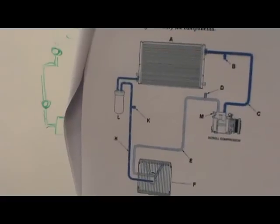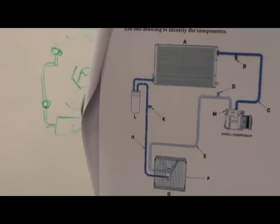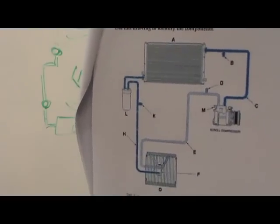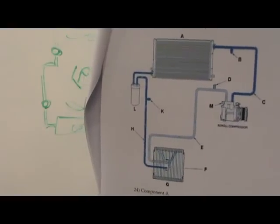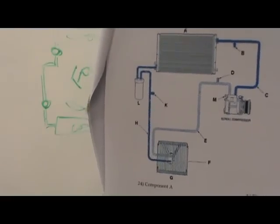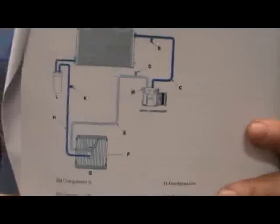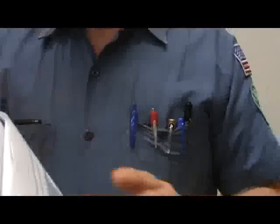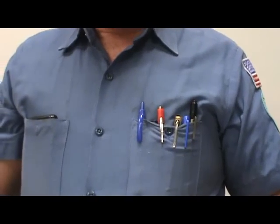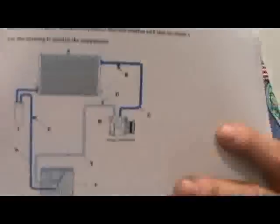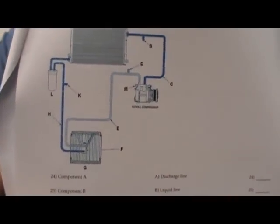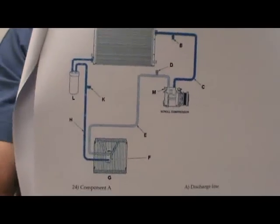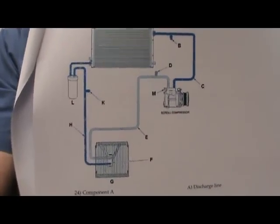Between the compressor and the condenser you've got the discharge line — the big atom at the top is the condenser. Looking at the expansion valve system diagram: F is the expansion valve, right down there on the evaporator. Because it's got an expansion valve, you know that can is a receiver dryer, not an accumulator. The receiver dryer is always in the liquid line. Component H is the liquid line.